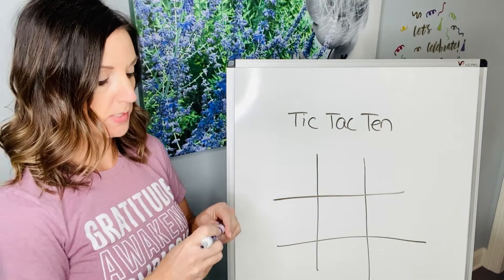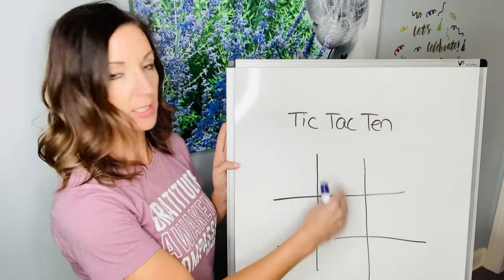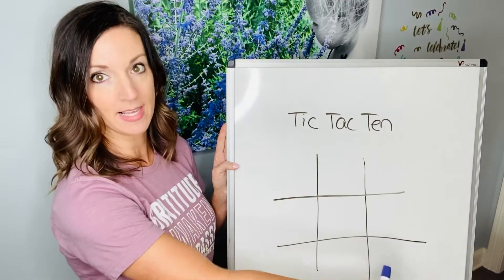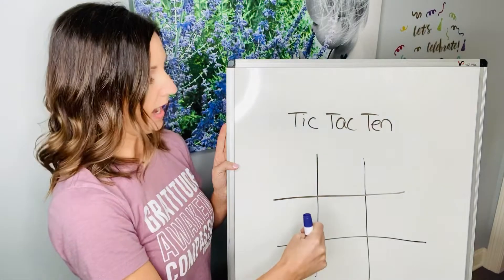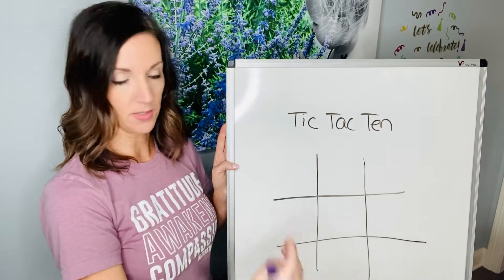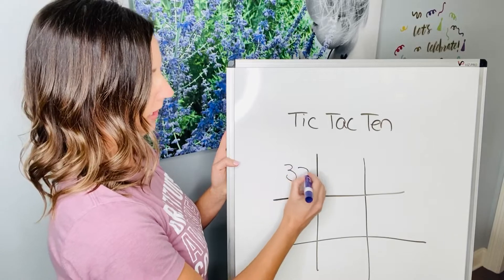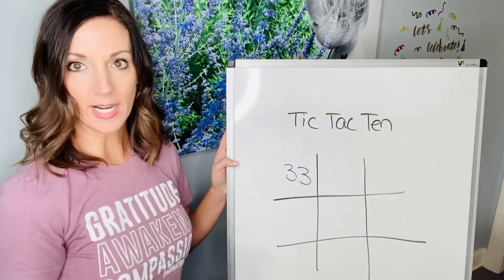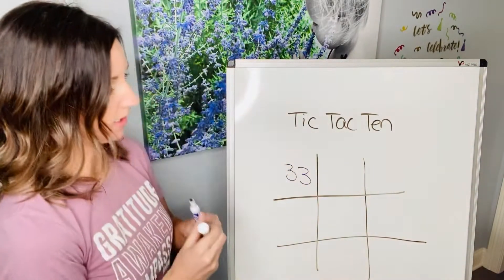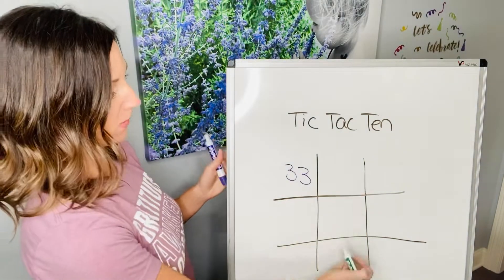What you would do is use numbers — you can't use a zero or nine in the center, so nine can only be at the end. You want to use the middle numbers. So let's say I'll put 33. Then the person playing against me could use a different color, and like Tic-Tac-Toe, you want to get three in a row — they may go in the middle.